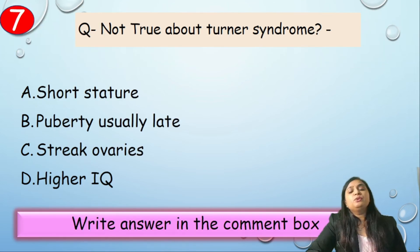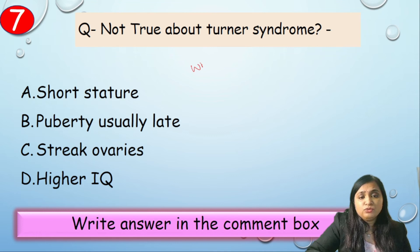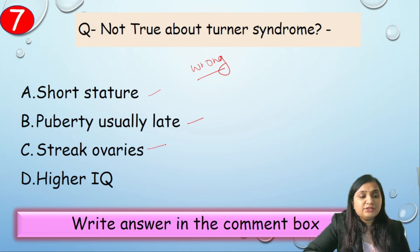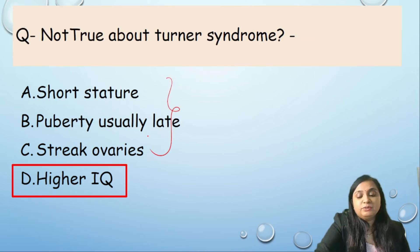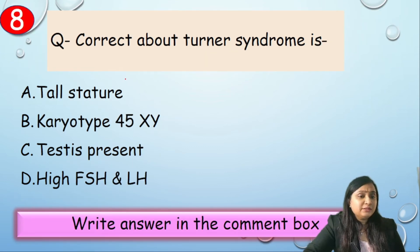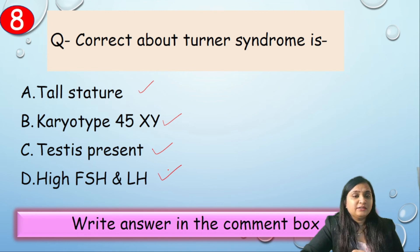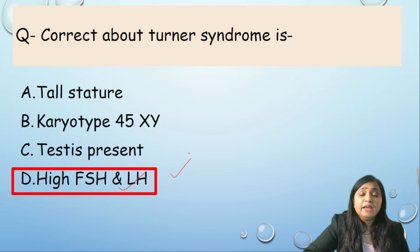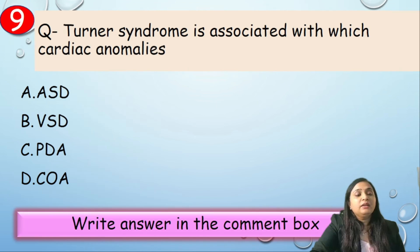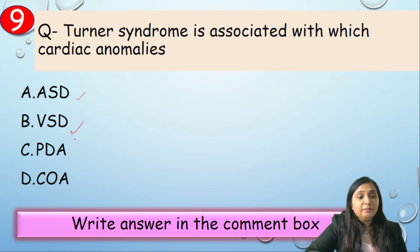Question 7: What is NOT true about Turner syndrome? Options: A) Short stature, B) Puberty usually late, C) Streak ovaries, D) Higher IQ. Correct answer is D — higher IQ is not a feature; the rest are all associated with Turner syndrome. Question 8: What is correct about Turner syndrome? Options: tall stature, karyotype 45XY, testes present, or high FSH and LH. Correct answer is high FSH and LH, because streak ovaries cause absence of progesterone and estrogen, so feedback mechanisms result in higher FSH and LH levels.